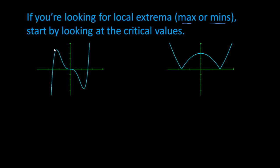So now if you're looking for local extrema, which is maxes or mins, you start by looking at the critical values, which is what we did here. We found slopes of zero and places where the derivative doesn't exist. All of those are my potential maxes and mins.